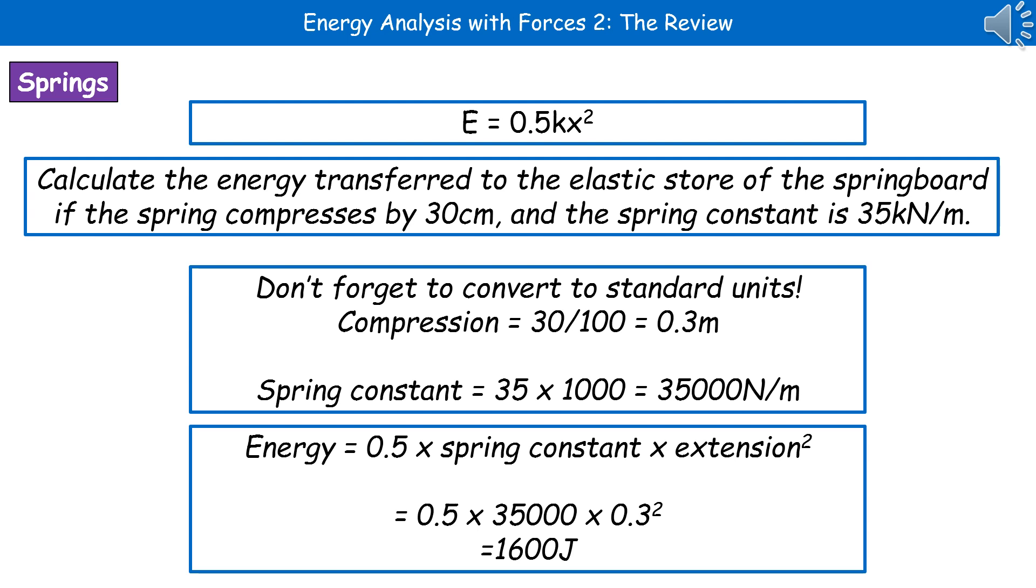What we need to do is 30 divided by 100 gives us 0.3 metres and our spring constant becomes 35,000 newtons per metre. Then, because we are talking about springs, we need to be recalling our formula for energy is 0.5 times the spring constant times the extension squared. Then we can just substitute in those values we've worked out. So 0.5 times 35,000 times 0.3 squared gives us our final answer of 1,600 joules.